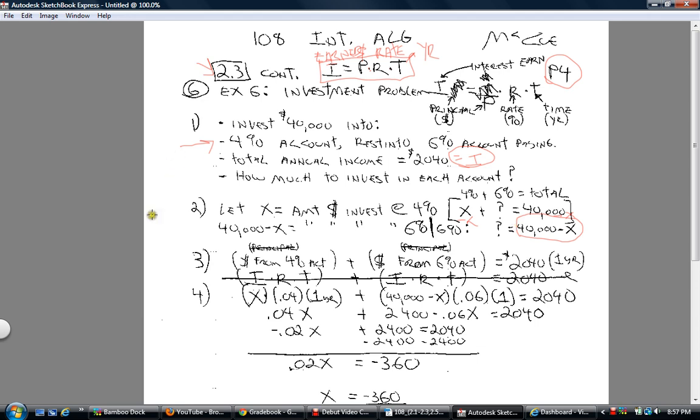So now I go down to step three, your strategy equation. So think about this. The money from the 4% account that you earn, the I, plus the money from the 6% that you're going to earn, the interest earned, has to equal $2,040. That's your strategy equation.